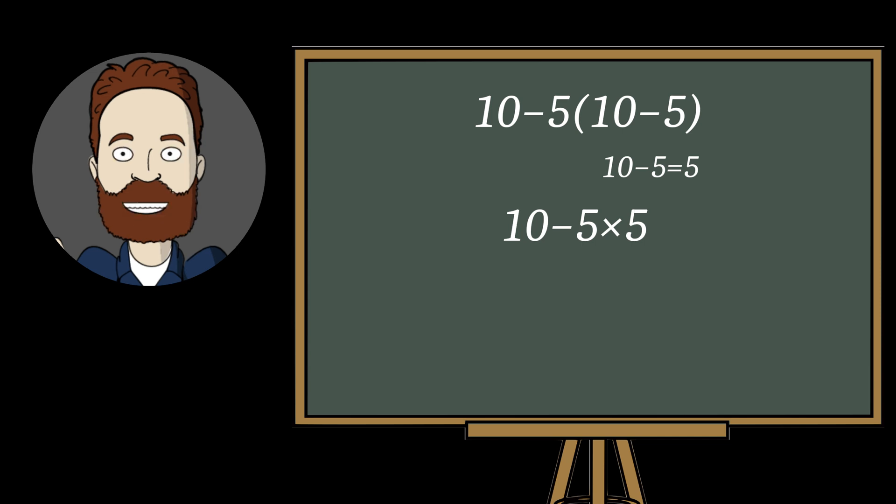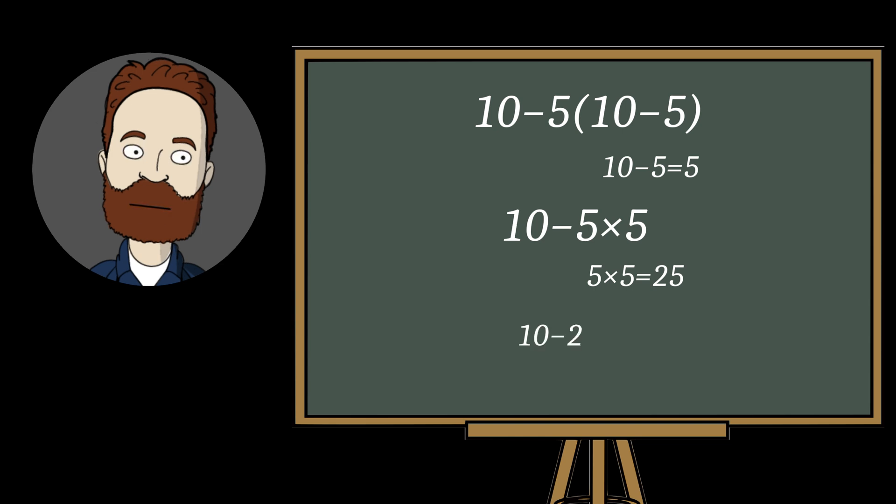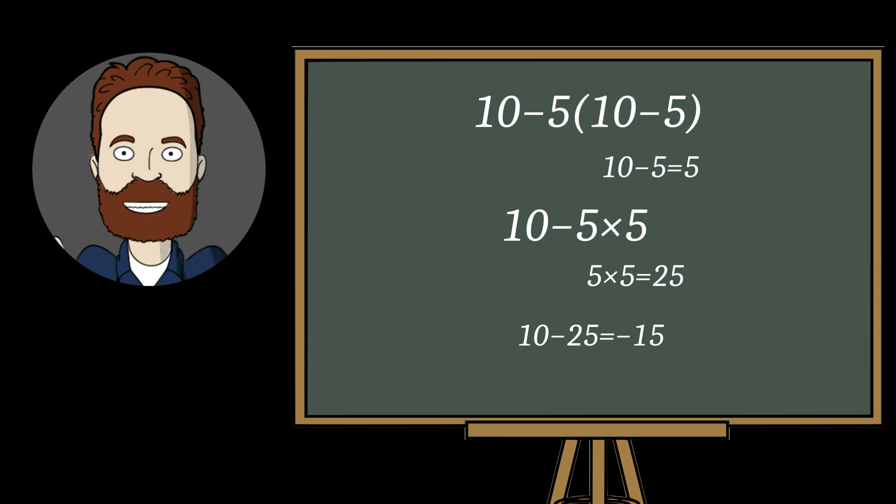Next, we perform the multiplication, 5 times 5 equals 25. And only then the subtraction, 10 minus 25 equals negative 15. This is our correct answer.